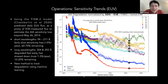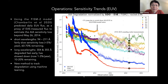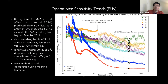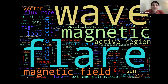One important note: the level-one data does not correct for this degradation, so you would have to apply that correction manually. If you do DEM analysis, for example, that matters.